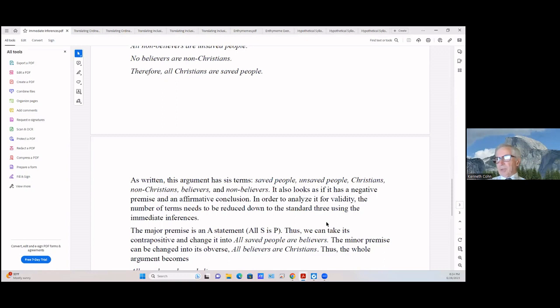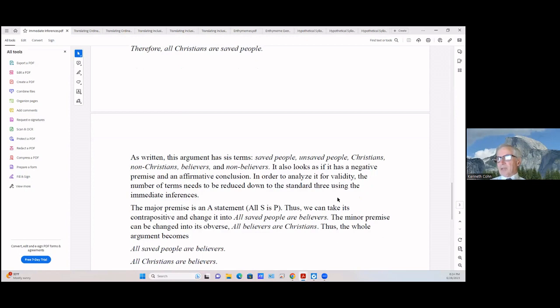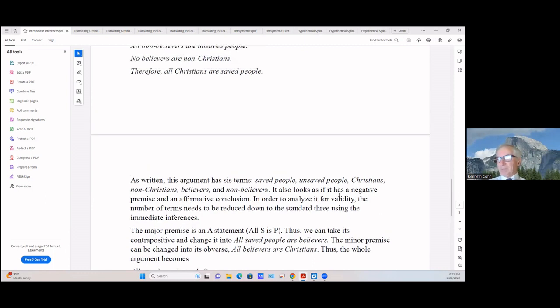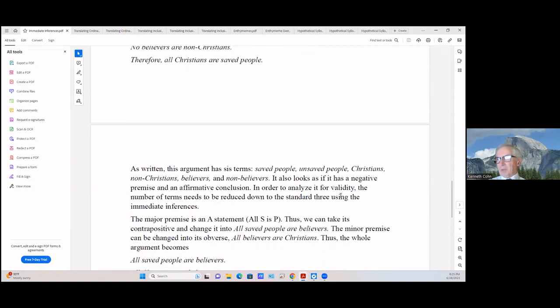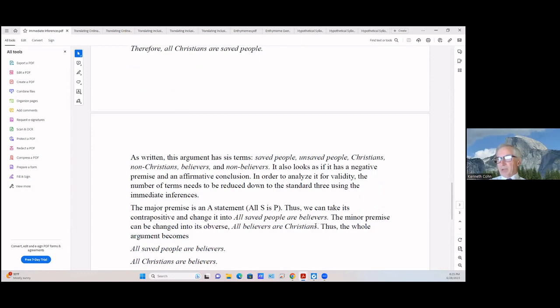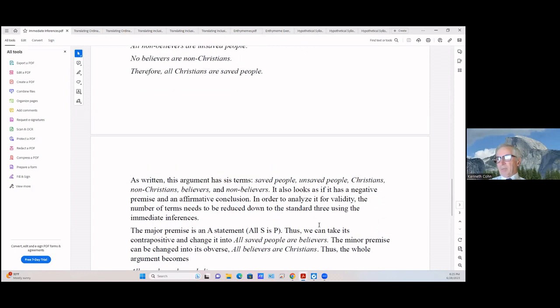Now consider the following argument: is it valid or invalid? All non-believers are unsaved people. No believers are non-Christians. Therefore, all Christians are saved people. As written, this argument has six terms: saved people, unsaved people, Christians, non-Christians, believers, and non-Christians. It also looks as if it has a negative premise and an affirmative conclusion.